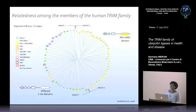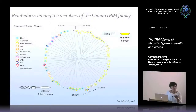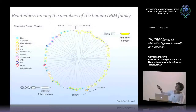Group 2 genes are more homogeneous. Their genomic organization is quite conserved, with exon-intron organization well conserved among different members. The protein structure is also similar — they are all composed of a ring, a B-box 2, the coiled-coil, and always the same C-terminal domain, which is the SPRY domain.